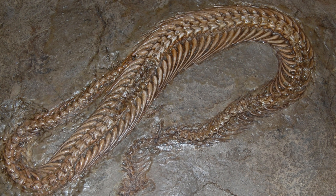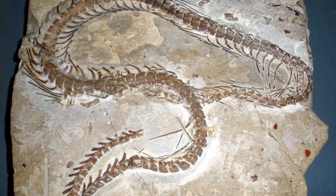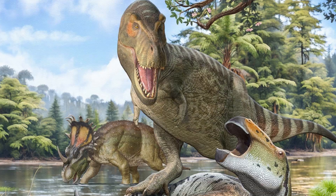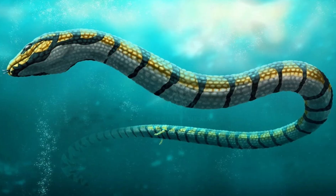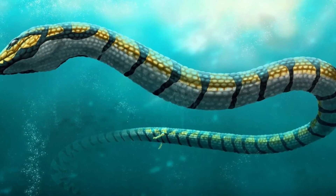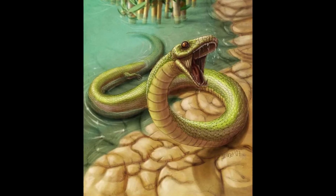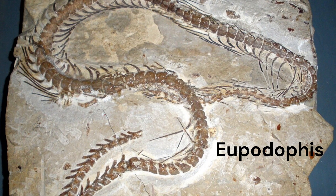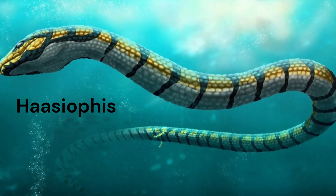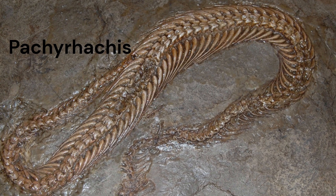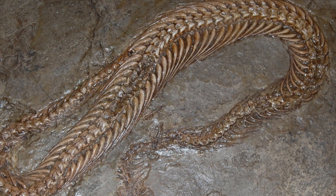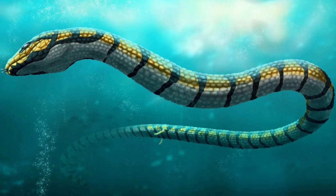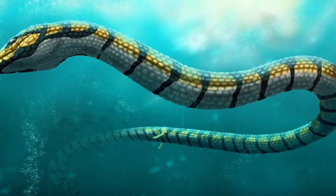The earliest iterations of what you might consider to be a snake came about during the late Cretaceous period, about 100 million years ago. Four genera in total were found, with three originating from the Middle East. The Eupodophis, the Haasiophis, and the Pachyrhachis roamed the Middle East during the same time period. These snakes actually had small hind legs, a remnant of their ancestors.